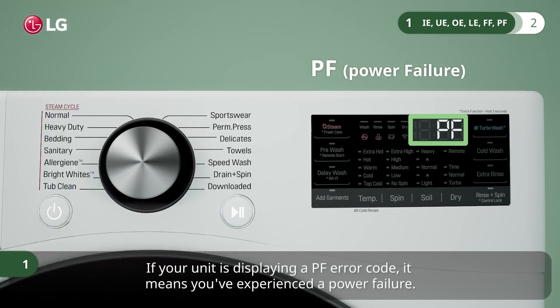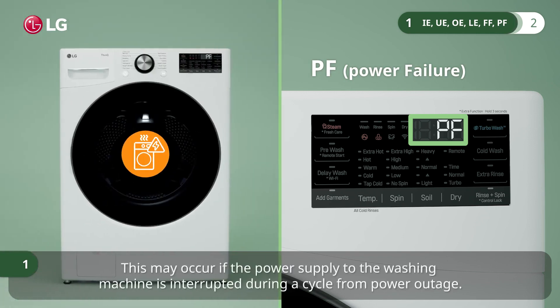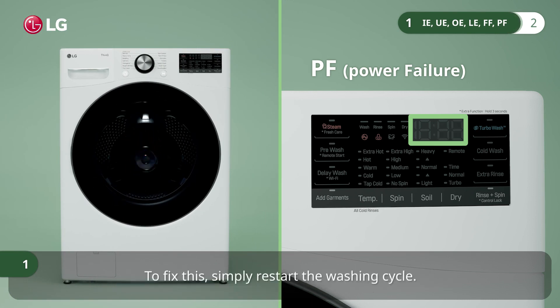If your unit is displaying a PF error code, it means you've experienced a power failure. This may occur if the power supply to the washing machine is interrupted during a cycle from a power outage. To fix this, simply restart the washing cycle.